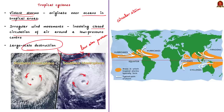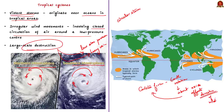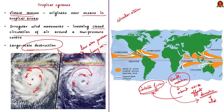Remember, the cyclonic wind movements are anti-clockwise in the northern hemisphere and clockwise in the southern hemisphere. This is due to the Coriolis force. The Coriolis force is an apparent force caused by Earth's rotation. In simple words, the rotation of Earth about its axis affects the direction of wind. The force responsible for affecting the direction of wind is called the Coriolis force. Cyclonic wind movements are anti-clockwise in the northern hemisphere and clockwise in the southern hemisphere due to the Coriolis force.